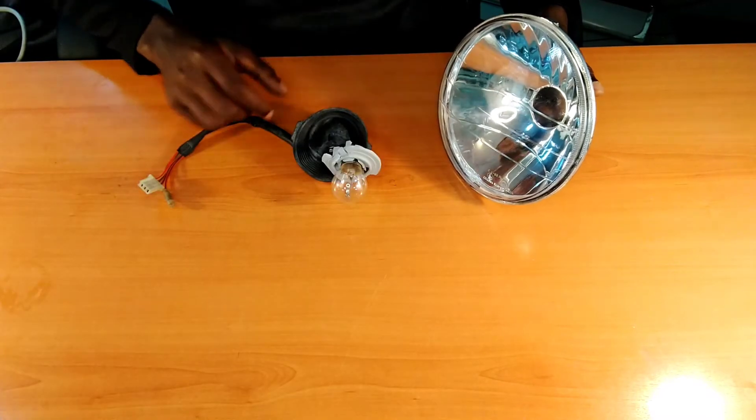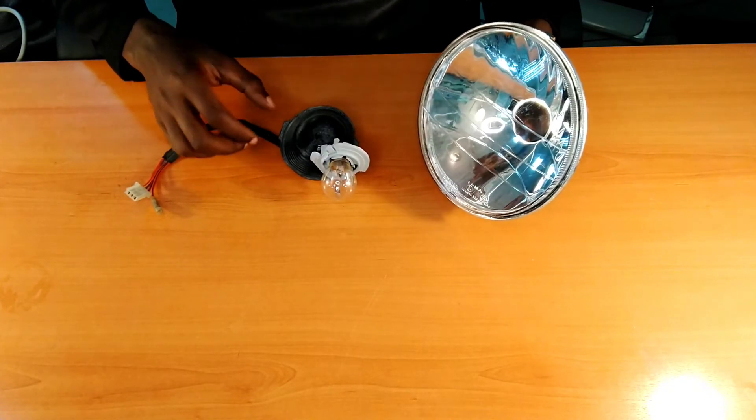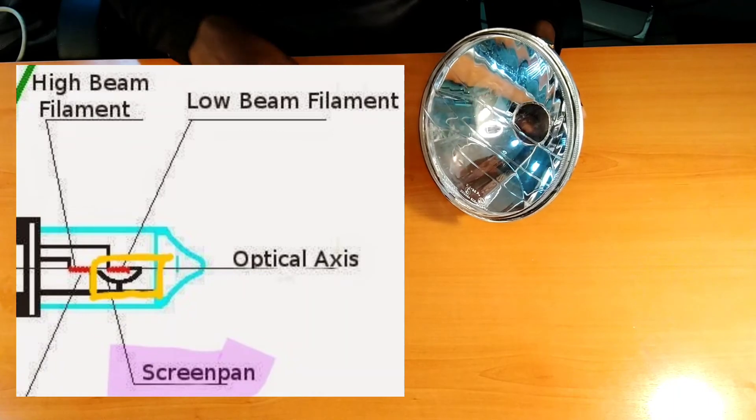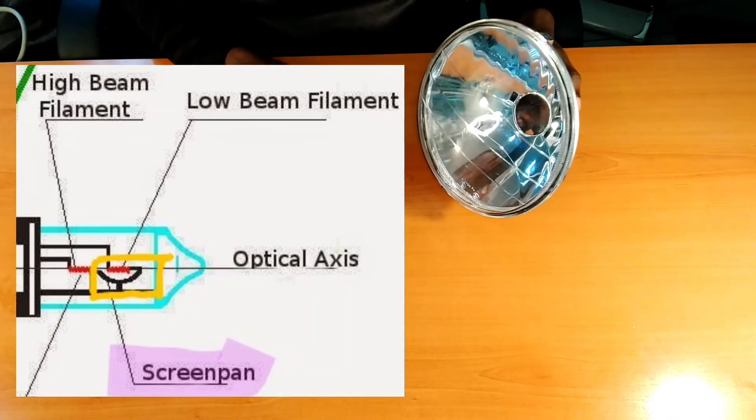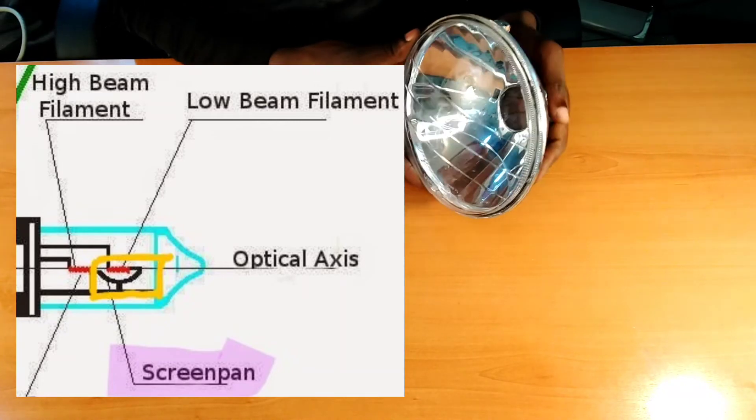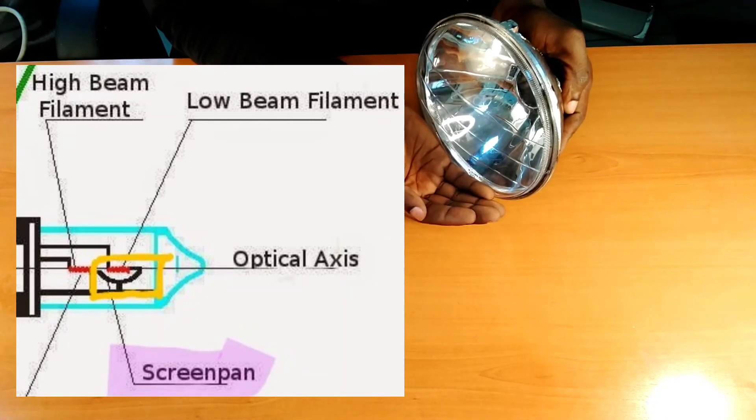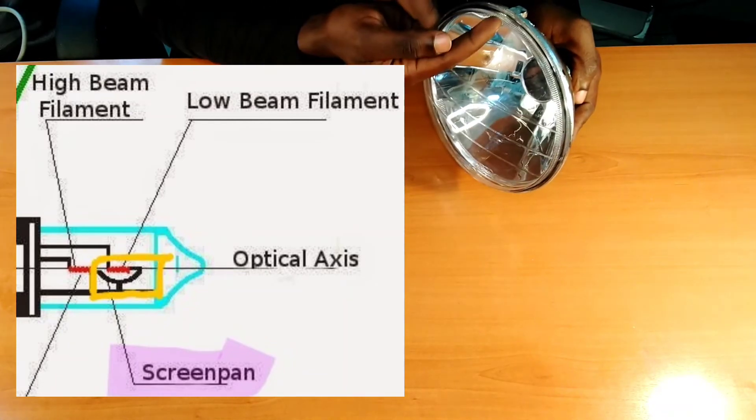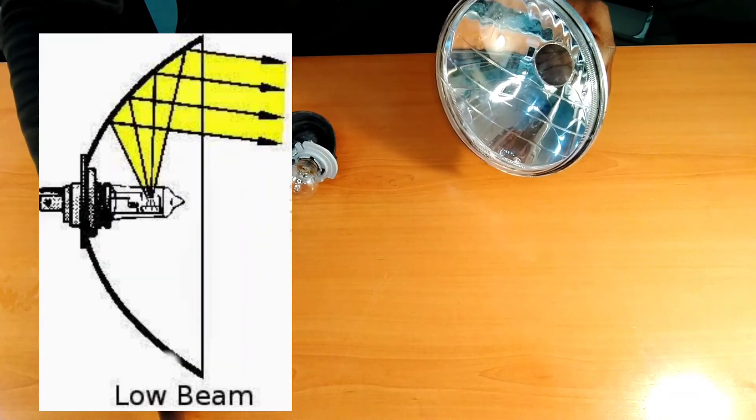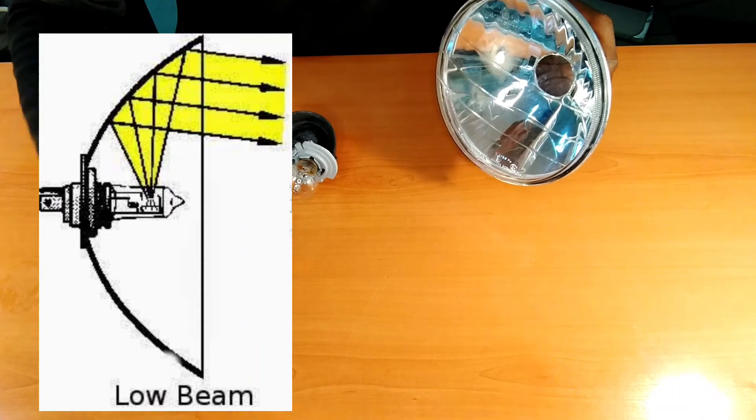How do we get low beam? We get low beam by positioning this structure so that if those rays are present, they will be blocked from reaching this part and then hitting this part and then going this way. In that way you will be having your low beam.